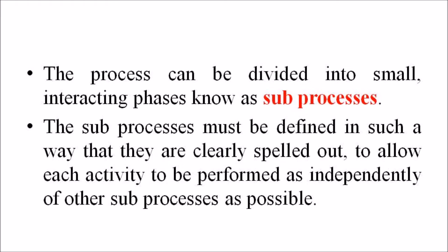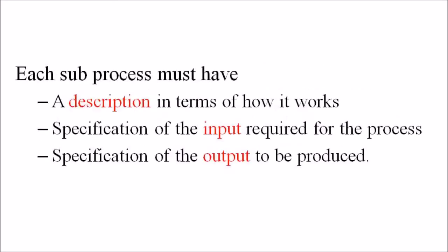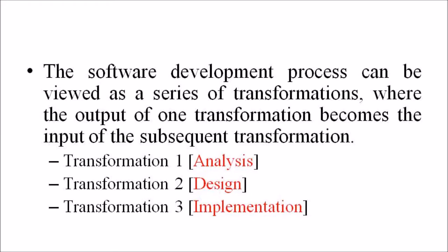When a sub-process changes the behavior of its parent process, the process can be divided into very small interacting phases known as sub-processes. The sub-processes must be defined in such a way that they are clearly spelled out, to allow each activity to be performed as independently of other sub-processes as possible. Each sub-process must have a description in terms of how it works, specification of the input required, and specification of the output to be produced.